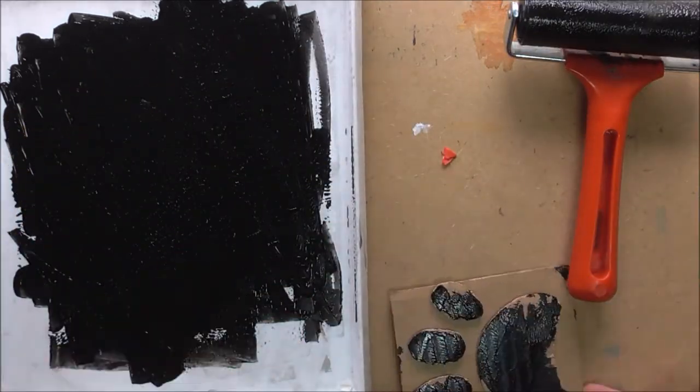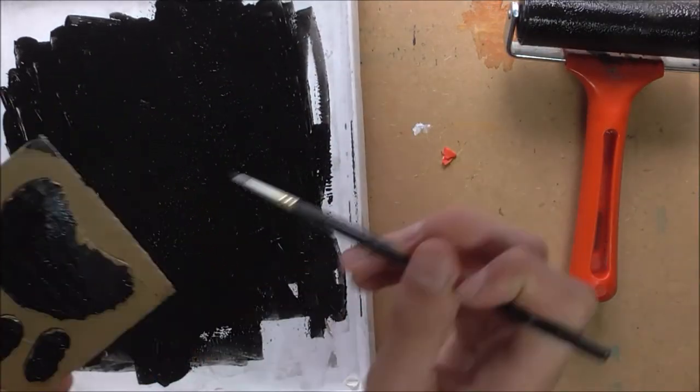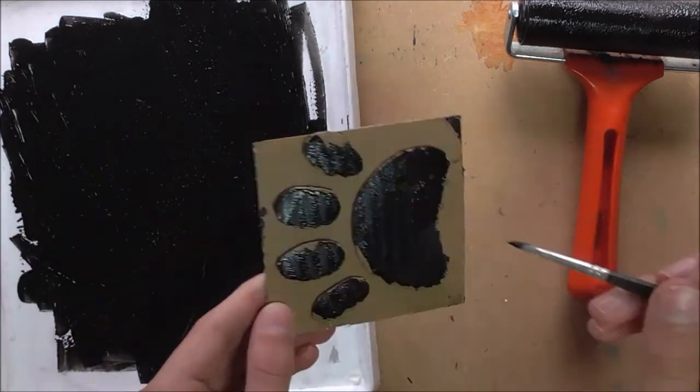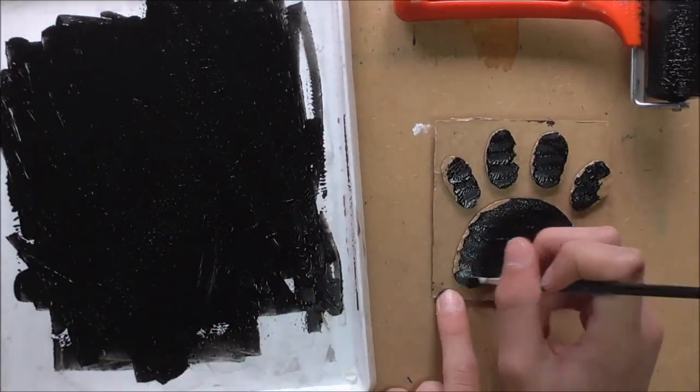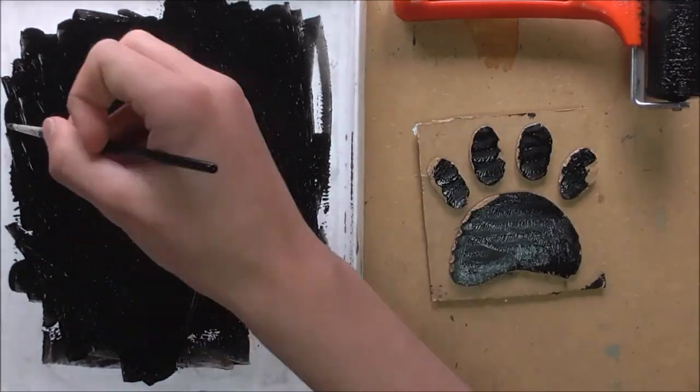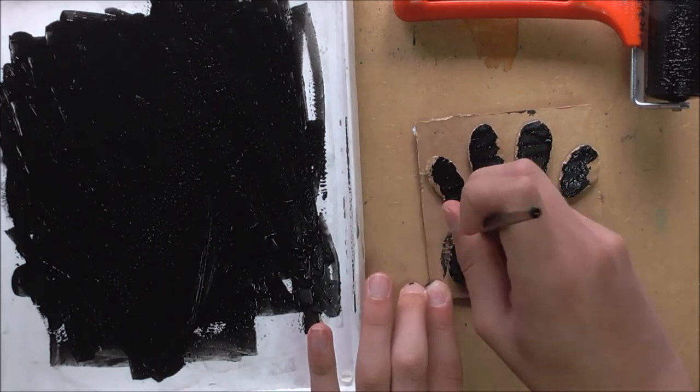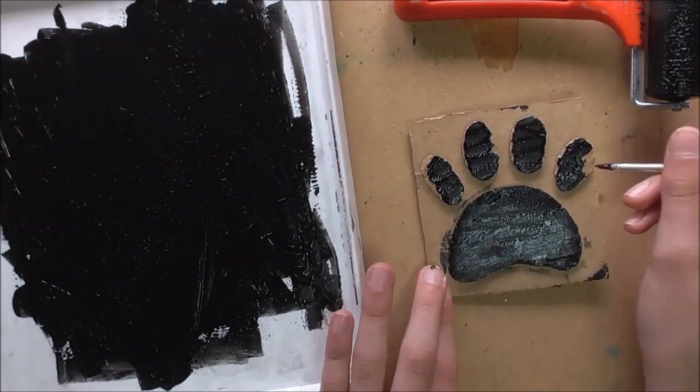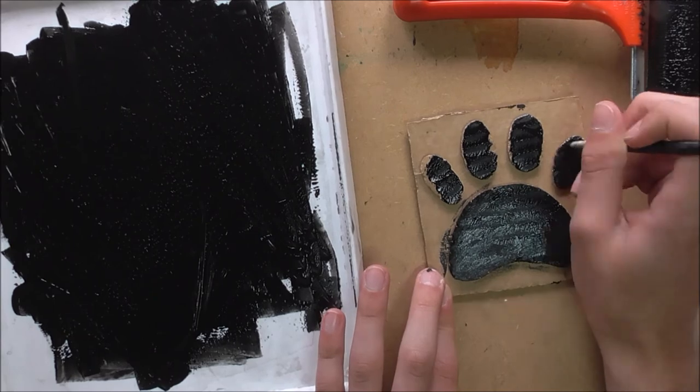Now what you can do as you can see is you want to roll the ink onto your printing plate or your stamp. But if the roller cannot get in all of the cracks and crevices, what you can do is you can get a paintbrush, dip it in the ink, and just make sure everything is evenly coated. This will provide a really nice print in the end.